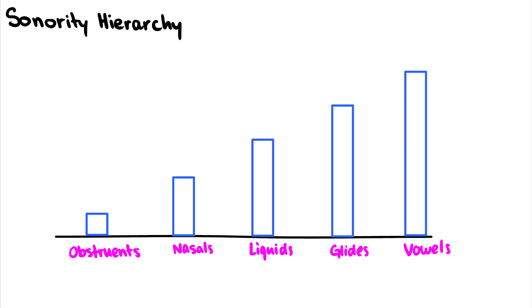In this video, we're going to very briefly discuss the sonority hierarchy. The sonority hierarchy is basically a chart that says how sonorous certain classes of sounds are. I like to use these bars to really demonstrate what the sonority hierarchy looks like and how we can transfer it to syllable structures and essentially plot syllables using these bars.